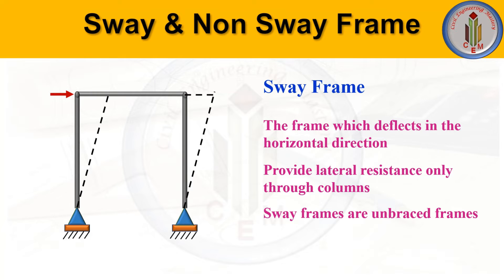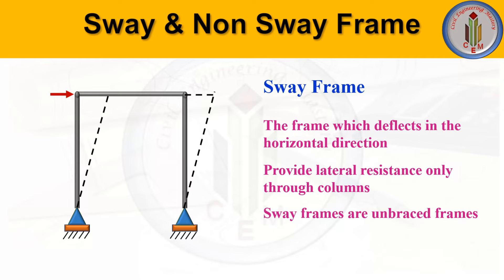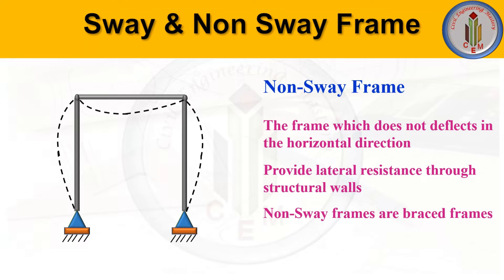A sway frame is a frame that deflects in the horizontal direction. When a horizontal load is applied on the frame, it tends to deflect horizontally — you can see the deflected shape of the frame. A sway frame provides lateral resistance only through its columns. Sway frames are unbraced frames; if we provide bracings, the frame becomes a non-sway frame.